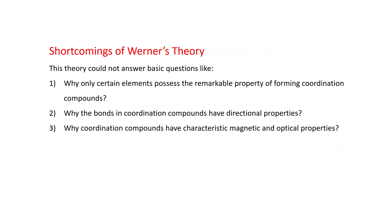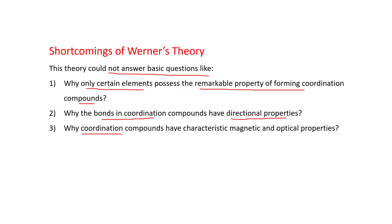Shortcomings of Werner's theory: this theory could not answer basic questions like why only certain elements possess the remarkable property of forming coordination compounds, why the bonds in coordination compounds have directional properties, and why coordination compounds have characteristic magnetic and optical properties.